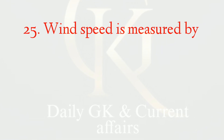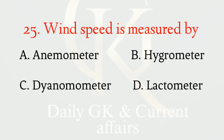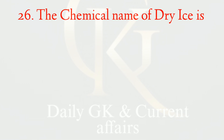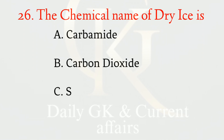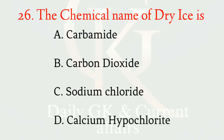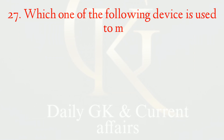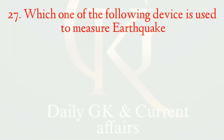Wind speed is measured by what instrument? The correct option is A: anemometer. The chemical name of dry ice is? The correct option is B: carbon dioxide.